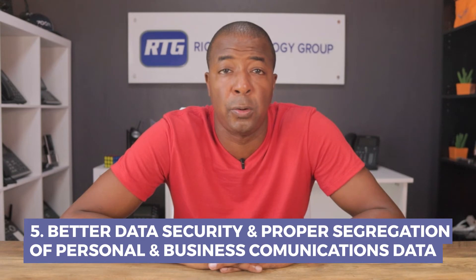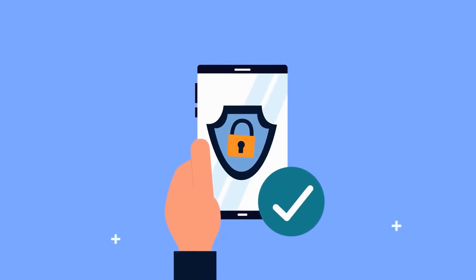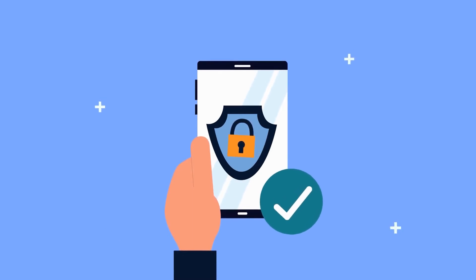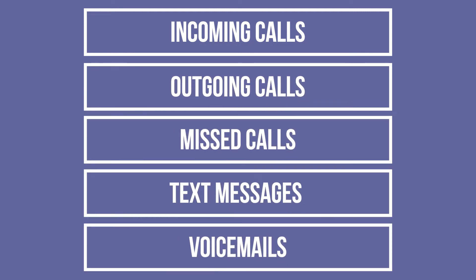And finally, number five: better data security and proper segregation of personal and business communications data. Mobile apps quite literally create a separate network layer within your cell phone that completely segregates your business-related incoming calls, outgoing calls, missed calls, text messages, and voicemails from your personal cell phone activity. This means you have separate voicemail boxes, call logs, and more. In short, if you receive a sensitive business text message or voicemail, it's completely separate from your personal interactions on the same cell phone.